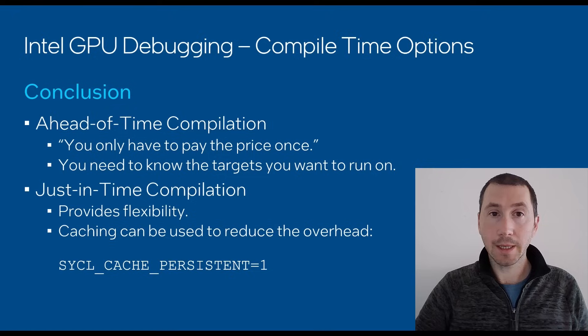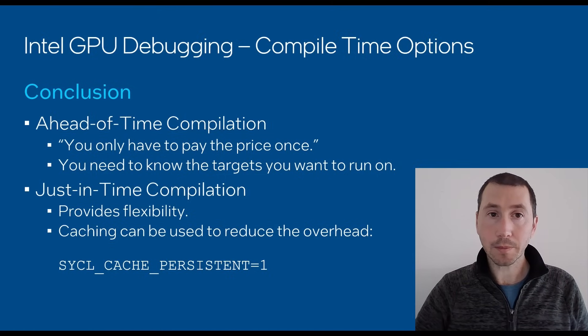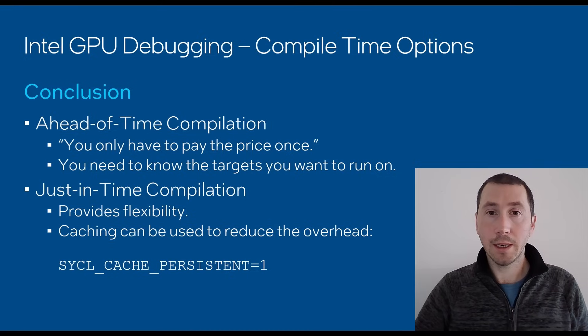Let's now conclude on what we've learned in this video. If we use ahead-of-time compilation, you only have to pay the price once. But it results in larger binaries and you need to know your target